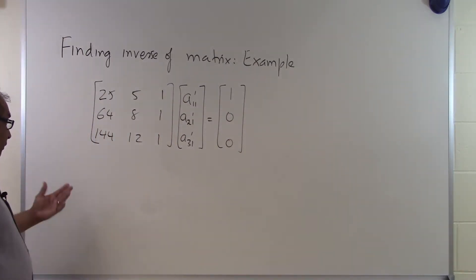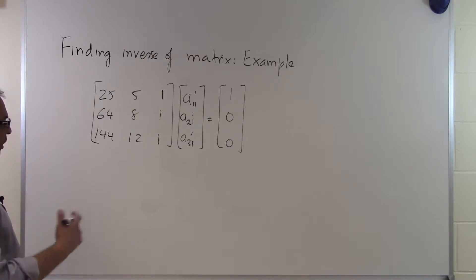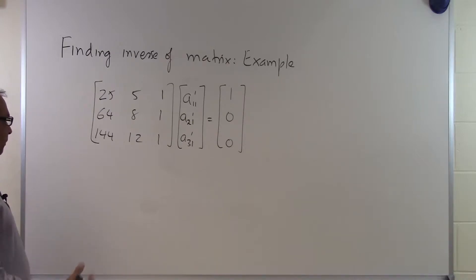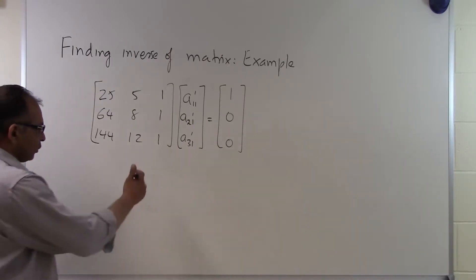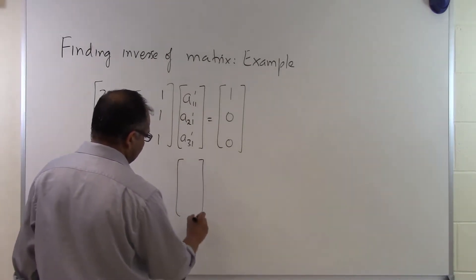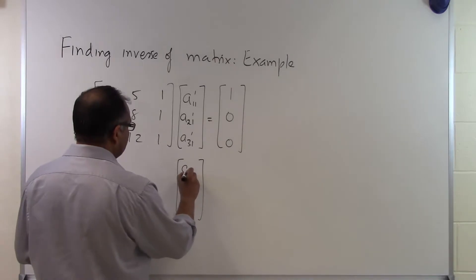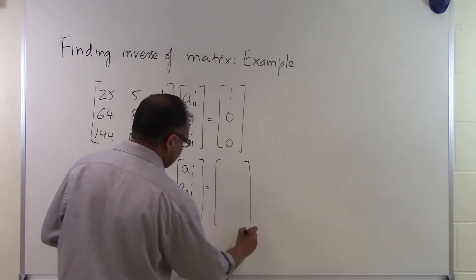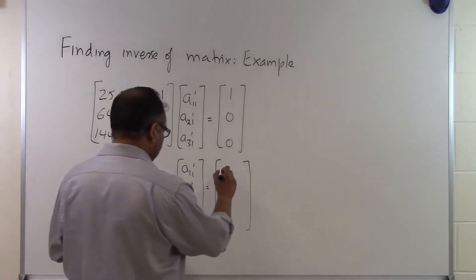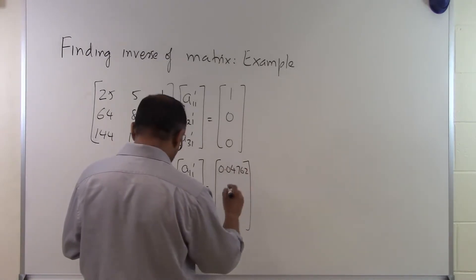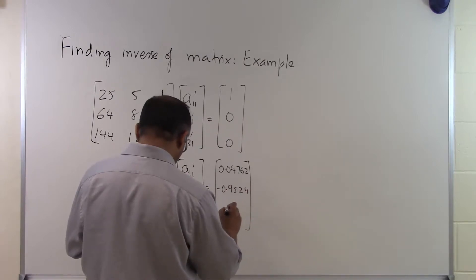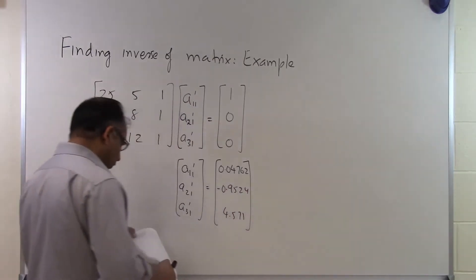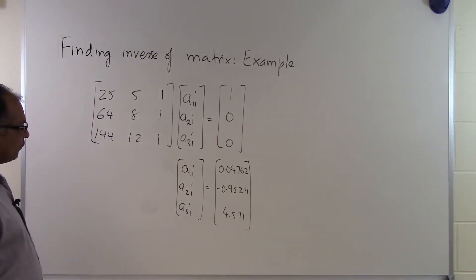So if that's the case, all we have to do is solve these three equations with three unknowns. We are not going to show how to solve them, because this is not the best way to find the inverse of a matrix — we just want to get through the concept. If I solve this set of equations by any method, I will get the following solution: 0.04762, minus 0.9524, and 4.571. So this is the first column of the inverse of the matrix.